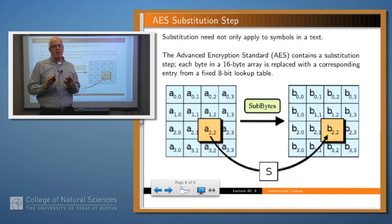So substitution is not just used in these older ciphers, but it's used also in modern ciphers. So, for example, the Advanced Encryption Standard or AES is a very common, very popular cipher these days. And there's a particular step in it which is exactly a simple substitution step. So AES uses an array of 16 bytes. That's where you put the original plain text.